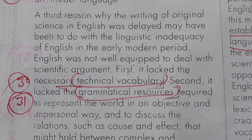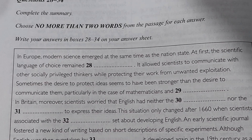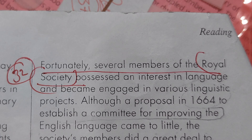These are the answers. This situation only changed after 1660 when scientists associated with the blank set about developing English. Yeh situation 1660 ke baad change hui, jab kisi group ke scientists ne English ko develop karne ka socha. Fortunately, several members of the Royal Society possessed an interest in language and engaged in various linguistic projects. Toh iska answer 'Royal Society' hoga.